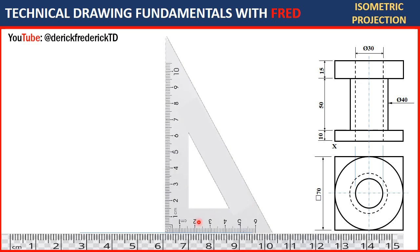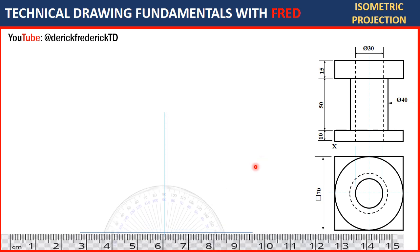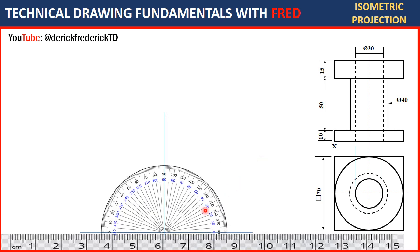Align your set square in this form and drop a perpendicular line here. After dropping that line, get your protractor and align it. You already know how to draw this isometric box — take note of 30 degrees to the right and to the left and draw lines through those 30-degree lines.